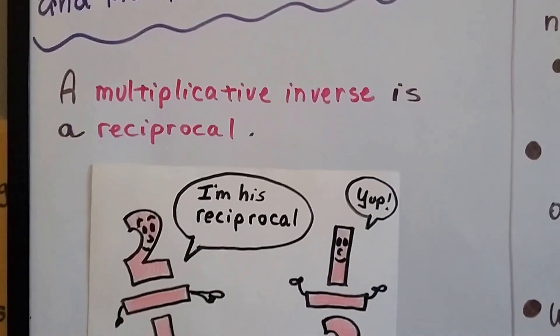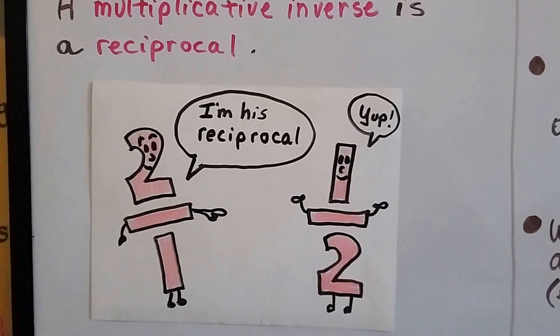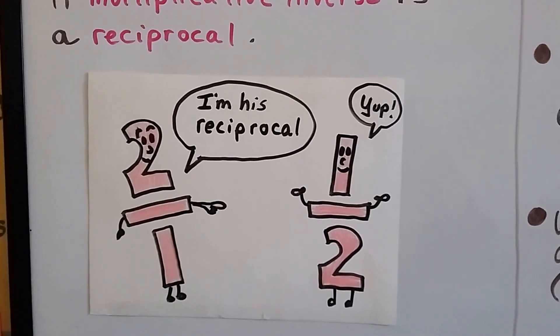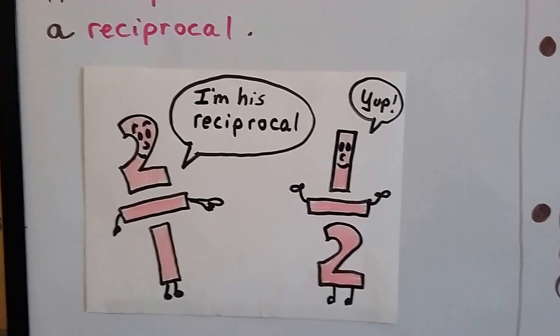A multiplicative inverse is just a reciprocal. It's the upside-down version of a fraction. It's just flipped around. 2 is on top, now 2 is on bottom.